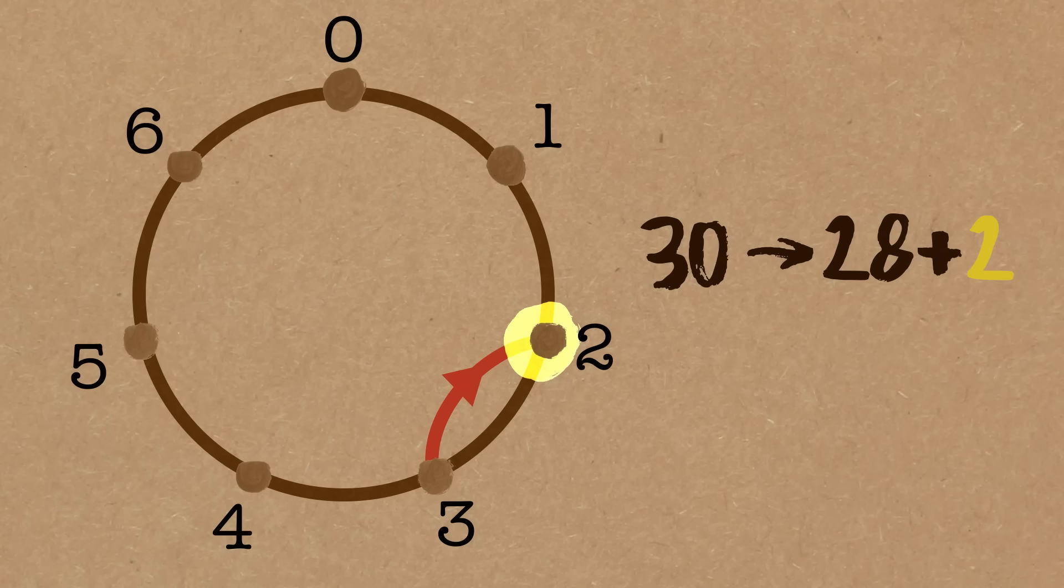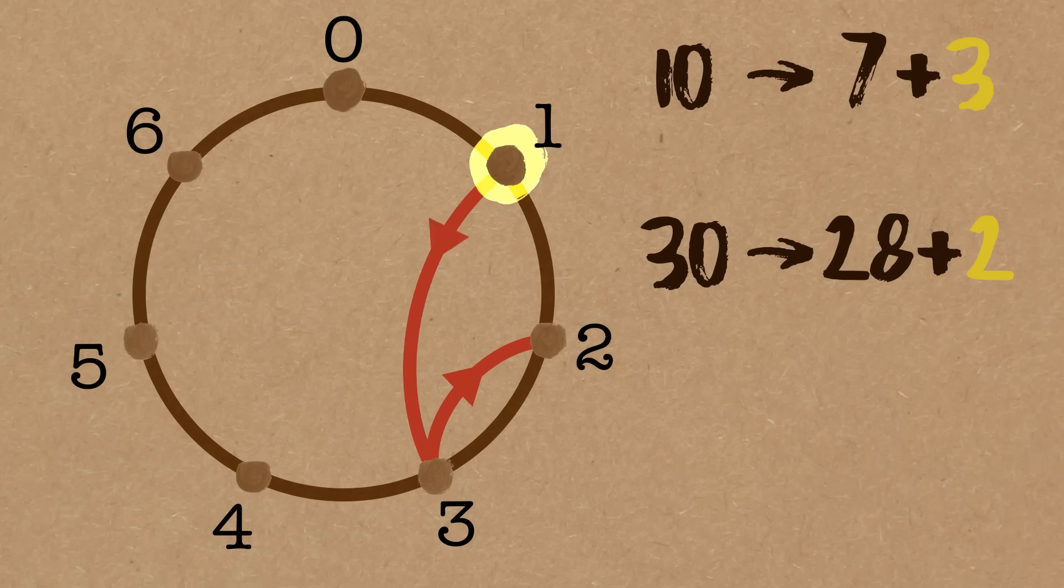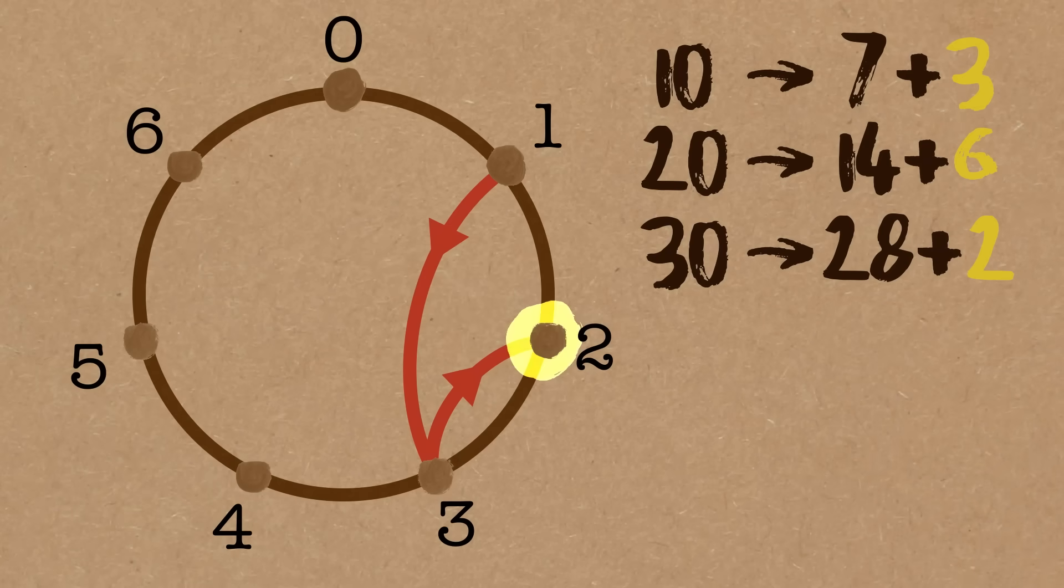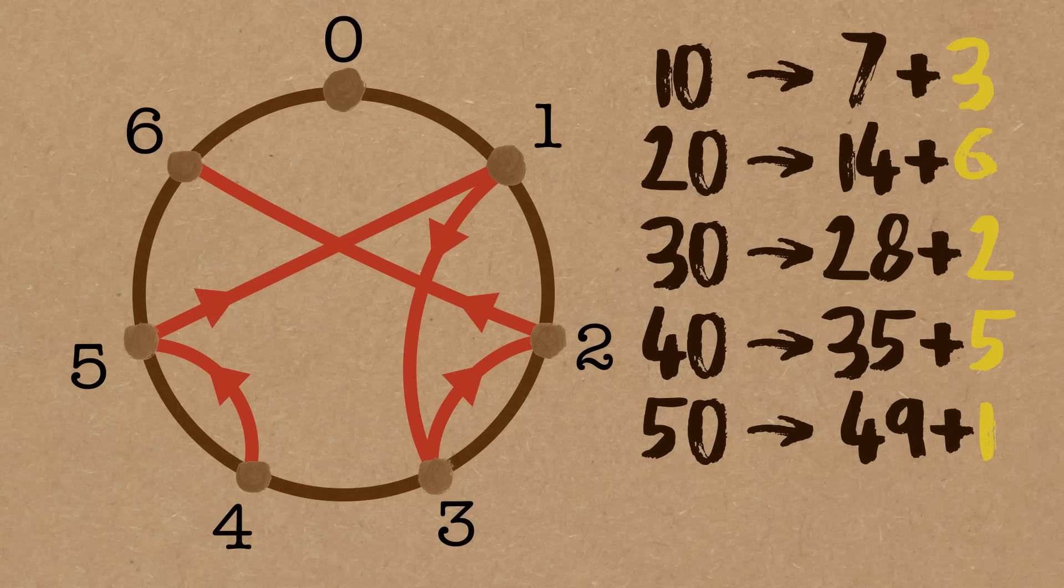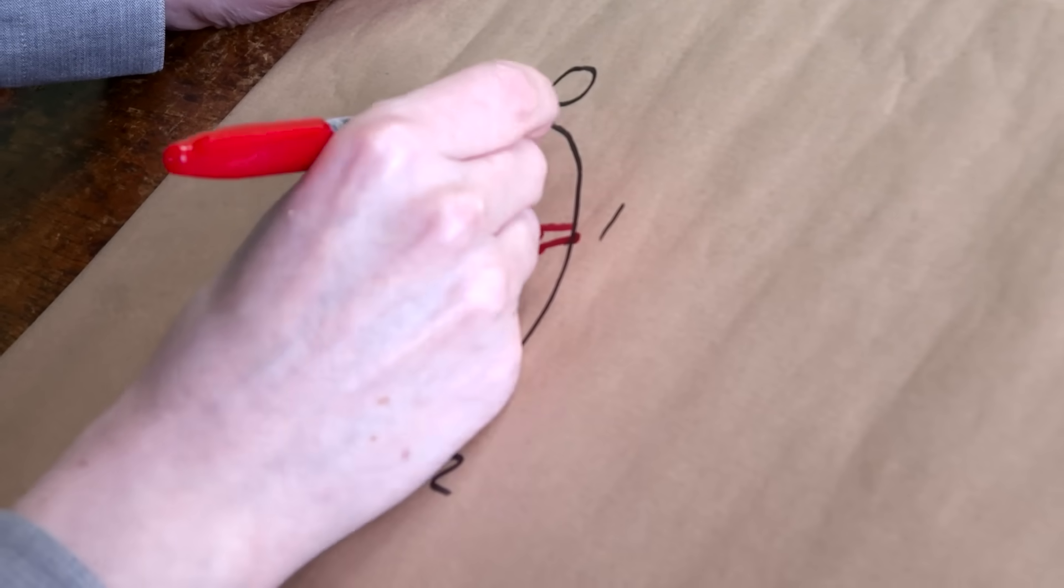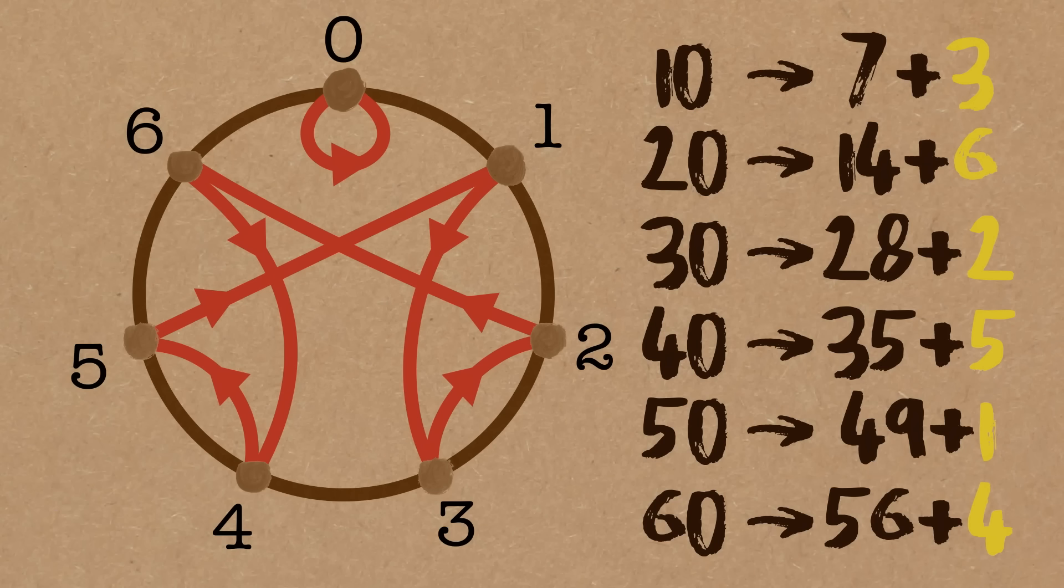So I'm going to do the same thing for the other numbers. If I start on one, multiply by ten, so that's ten, that's seven and three left over. So one, if I multiply by ten, would go to three. Two would be, multiply by ten is twenty, that's fourteen and six left over. So the shortcut to go from two to twenty is going from two to six. And then I can do the other numbers. So four would take me to forty, which is thirty-five and five left over. Takes me here. Five times ten is fifty, which is forty-nine and one left over. Six times ten is sixty, which is fifty-six and four left over. Like that. And zero multiplied by ten, well that's going to be zero. So that actually goes back to itself. So these red arrows represent multiplying by ten.